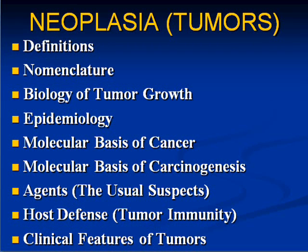The chapter is divided into nine areas: definitions, nomenclature, biology of tumor growth, epidemiology, a couple of chapters on molecular — which I'll try to decaffeinate as much as possible — some stuff on agents, and a lot of interesting clinical stuff on host defense and especially clinical features of tumor. These are the nine topics, and we will approach them correctly.